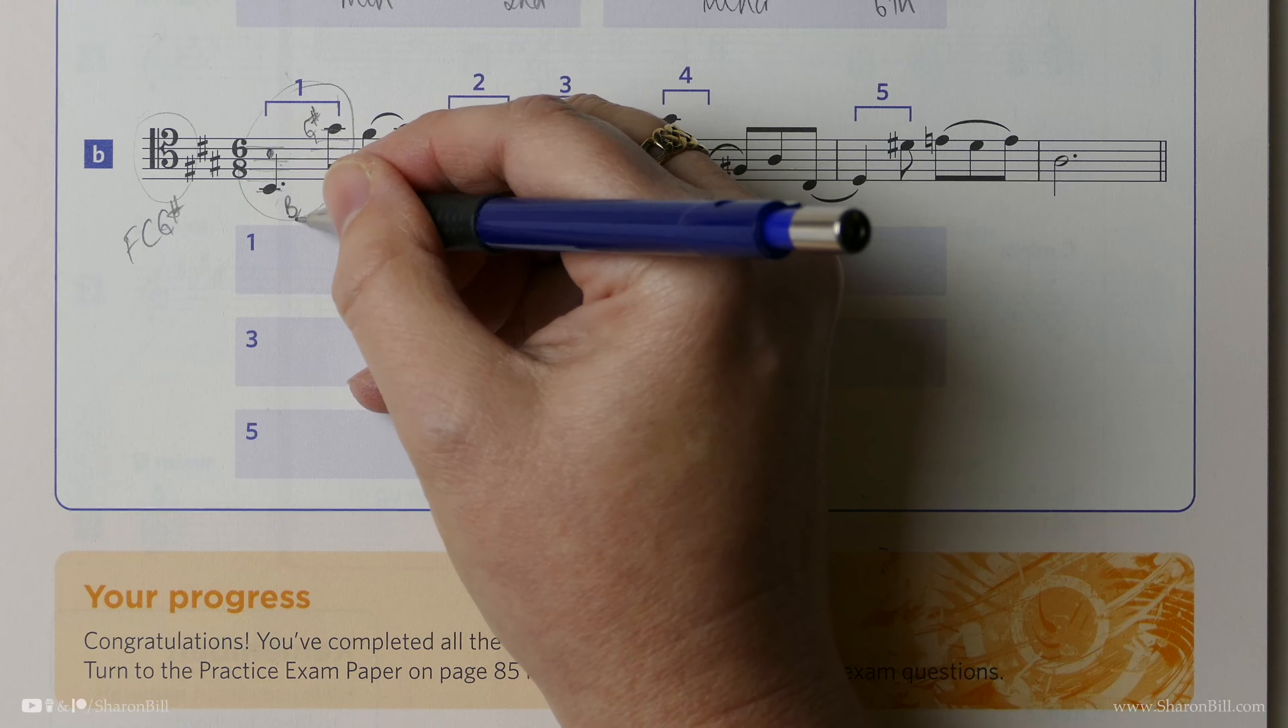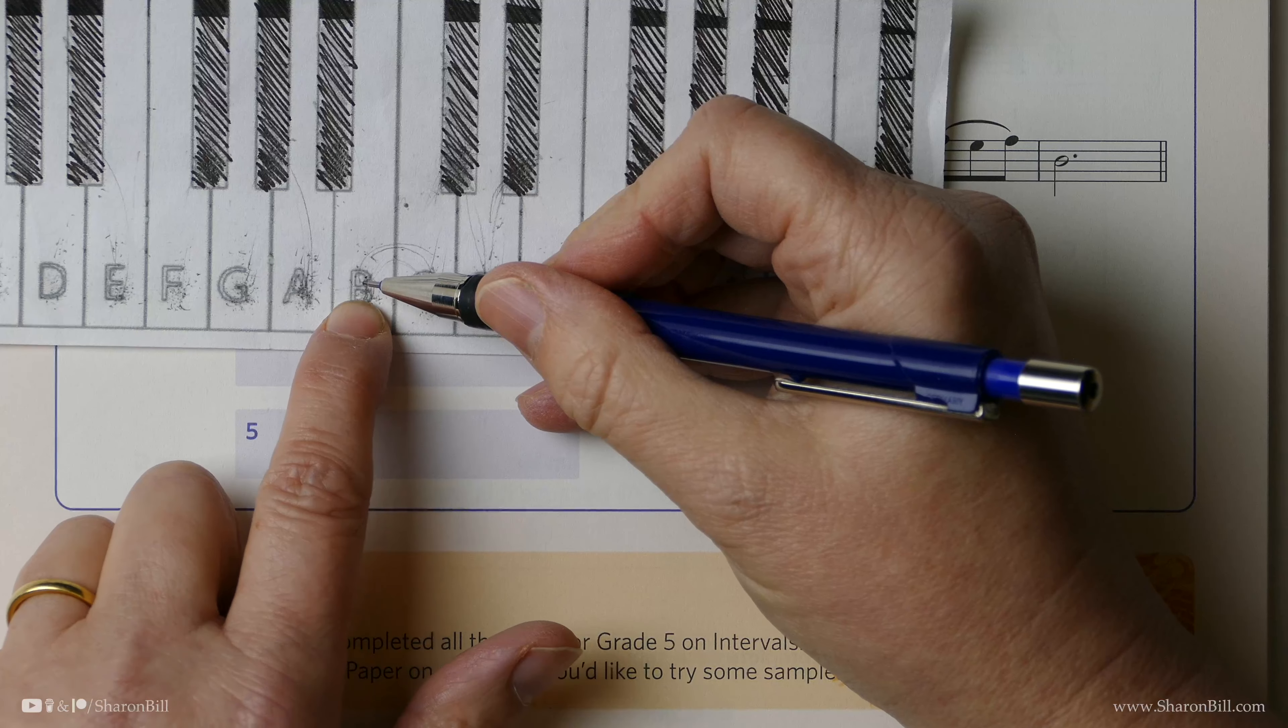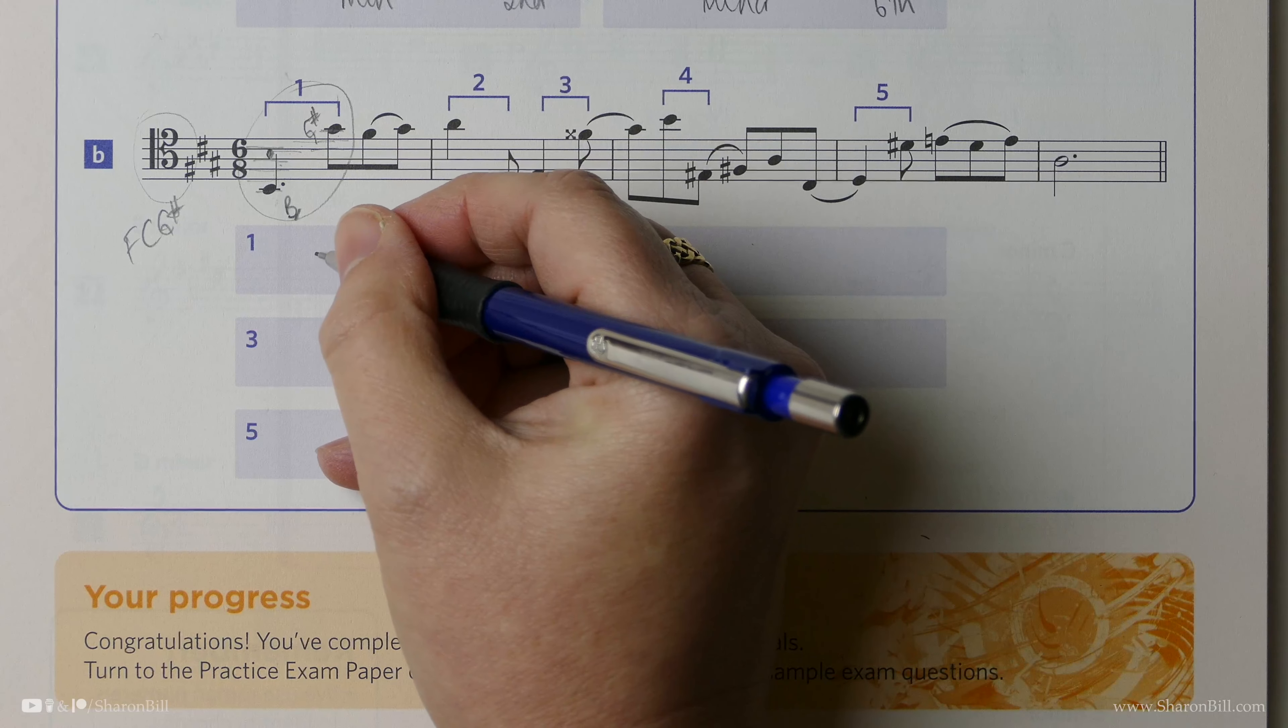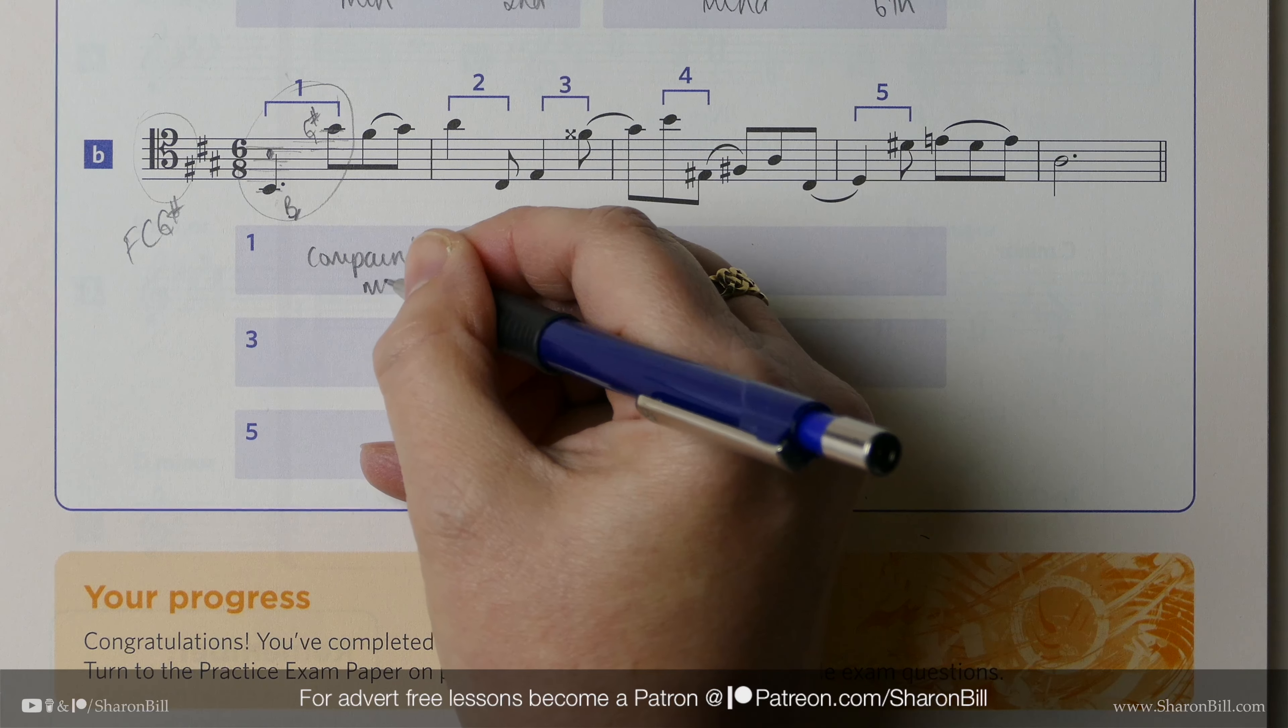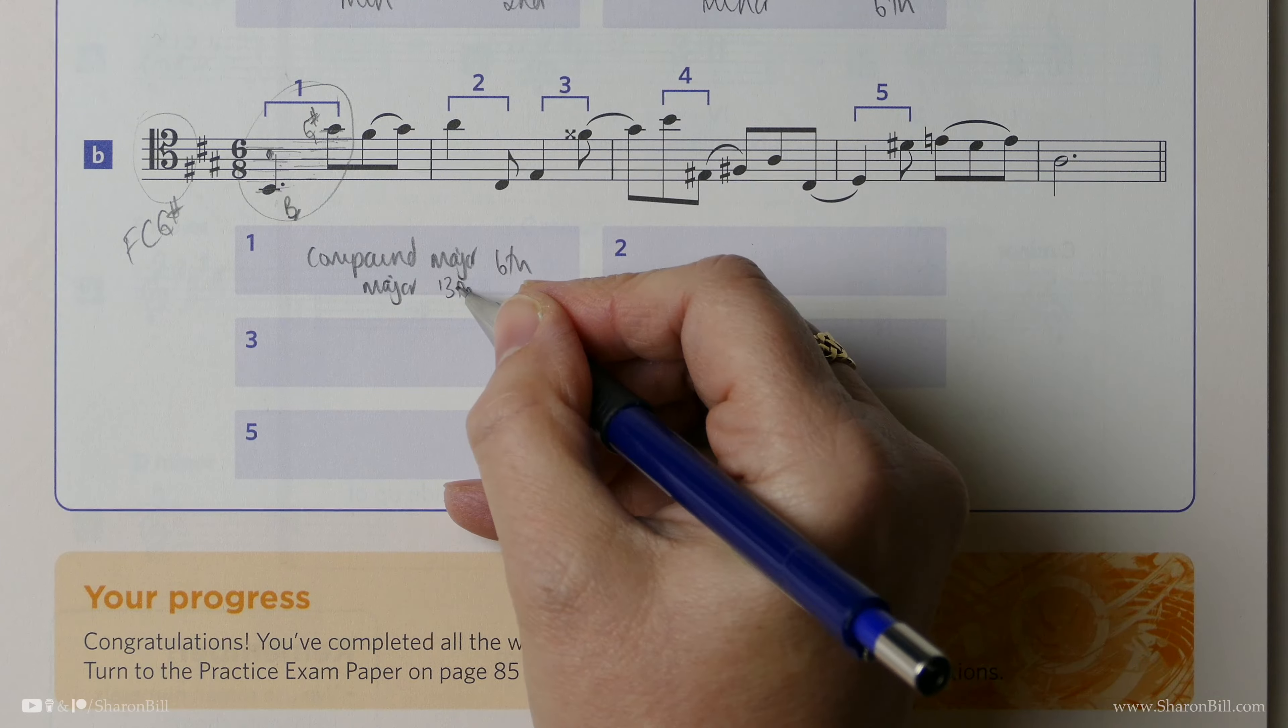Now, we take our lowest note as the tonic. But let's just count. It's a one, two, three, four, five, six. It's a sixth of some sort. Now, B major has a key signature of F, C, G, D, A. So G-sharp is part of that major scale pattern. That's a major interval. So we could either say it's a compound major sixth. Or now we know that it's major, we could just say that it's a major thirteenth because one, two, three, four, five, six, seven, eight, nine, ten, eleven, twelve, thirteen. And so you could do that.